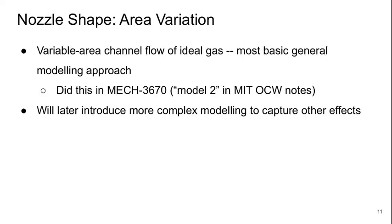Let's focus for today on the effects of the nozzle shape, specifically its area variation. So this means we're basically dealing with the variable area channel flow of an ideal or a perfect gas. This is basically the most basic general modeling approach we can take, and we did this back in aerospace fundamentals. And this is in the MIT OpenCourseWare notes associated with today. This is model 2. Later we'll introduce more complex modeling to capture other flow effects in lecture 3.